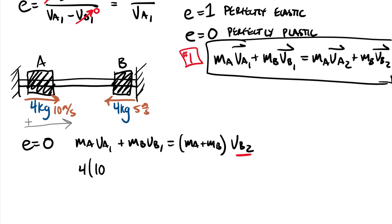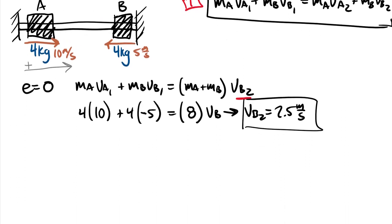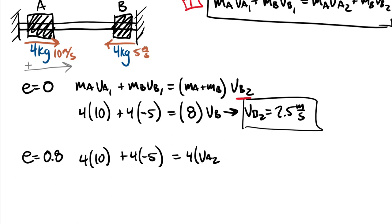For e = 0 (perfectly plastic), the particles stick together: 4(10) + 4(−5) = (4 + 4)·v_final. This gives v_final = 2.5 meters per second, positive, so after sticking together they move to the right at 2.5 m/s. Since e = 0, no coefficient of restitution equation is needed — there is only one unknown.